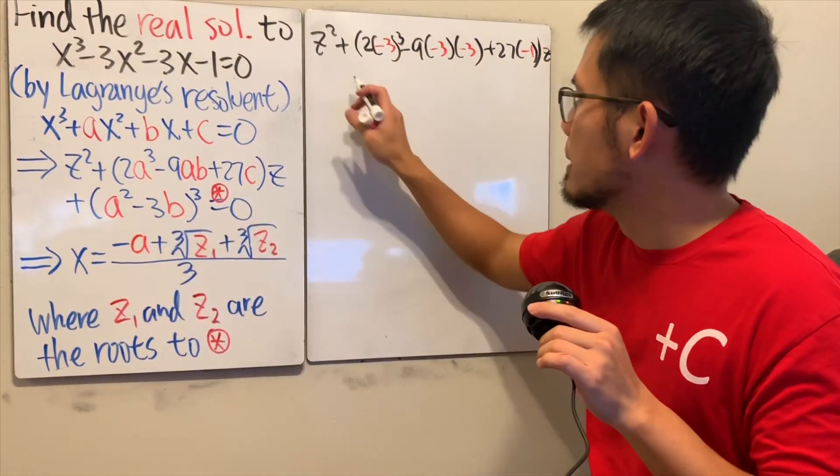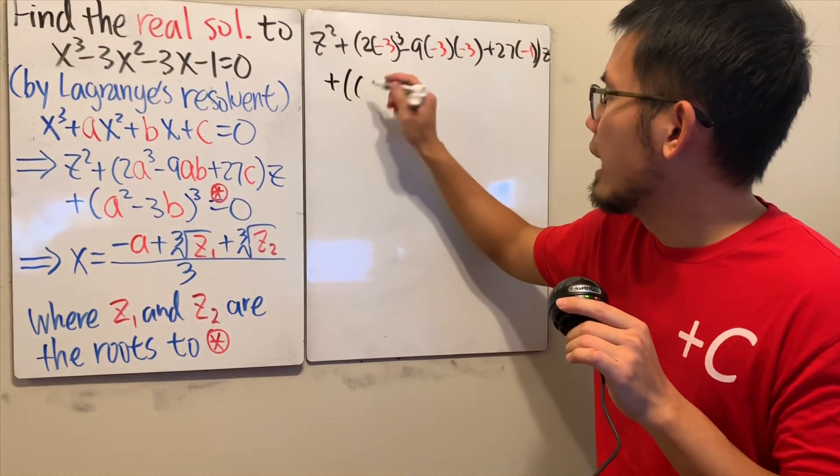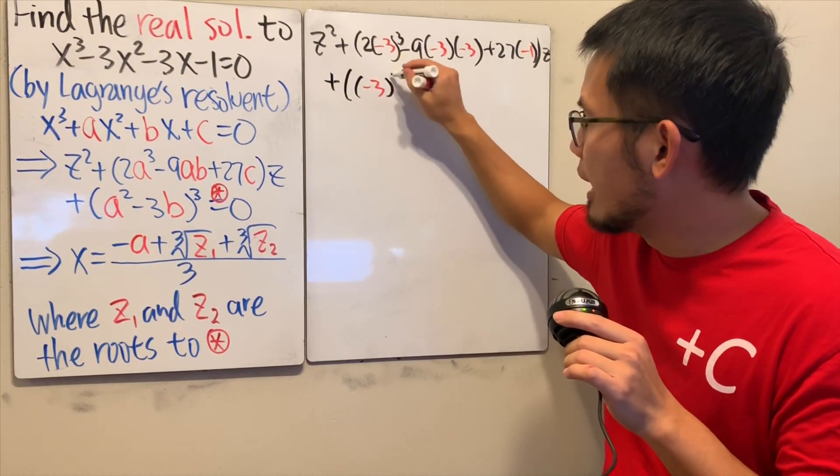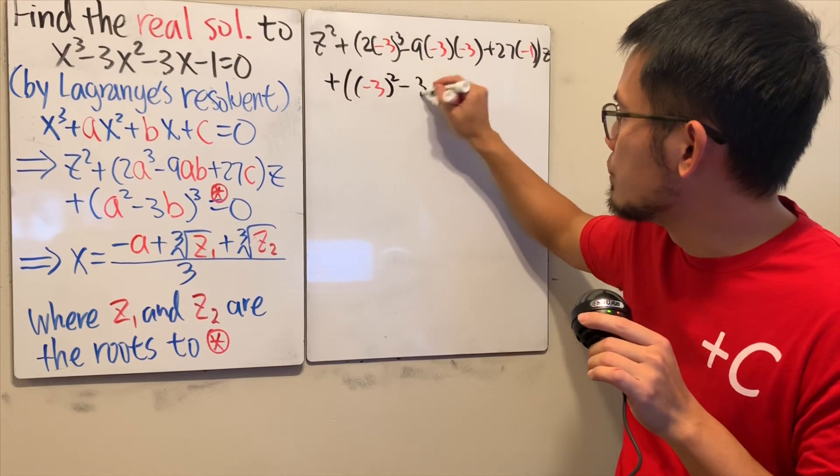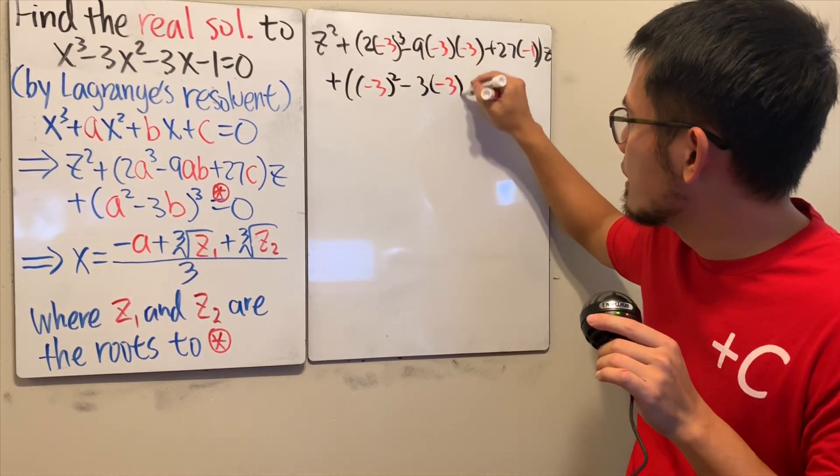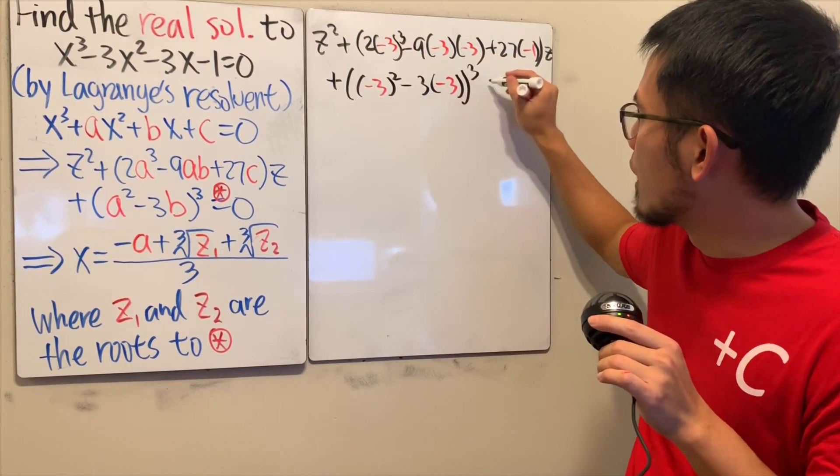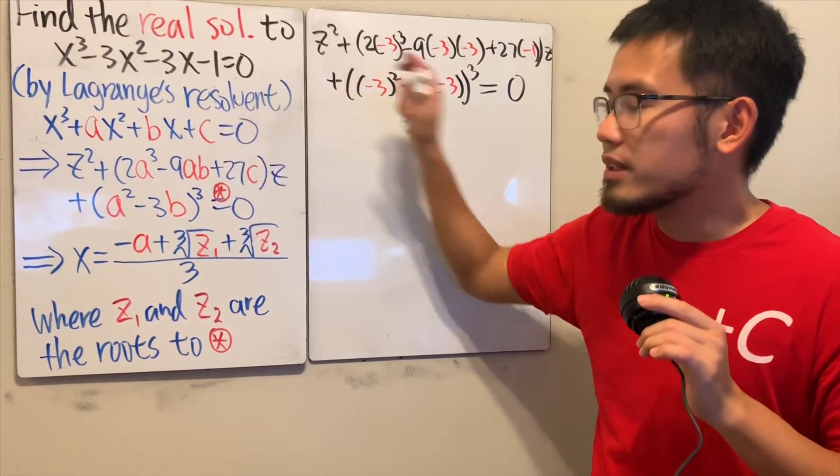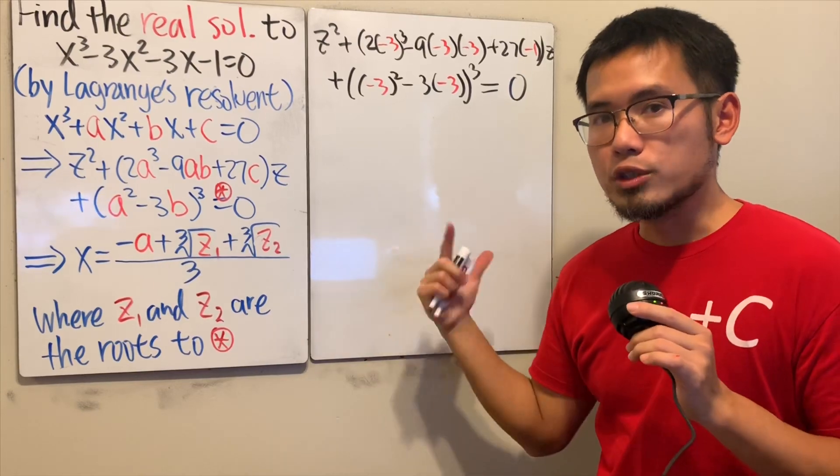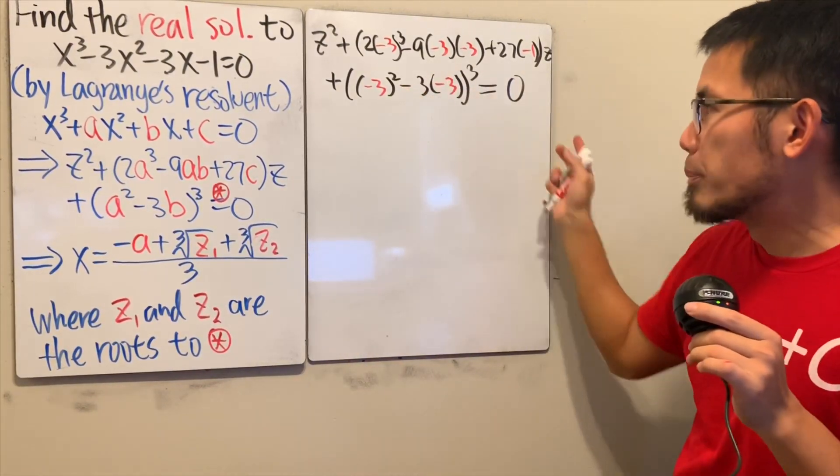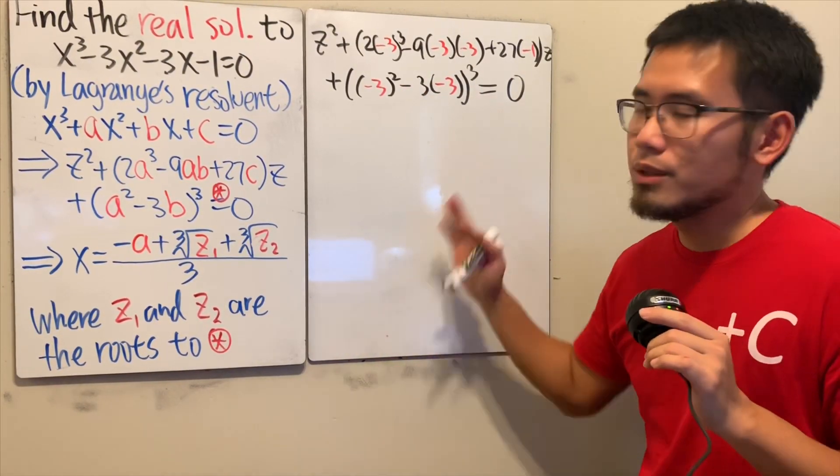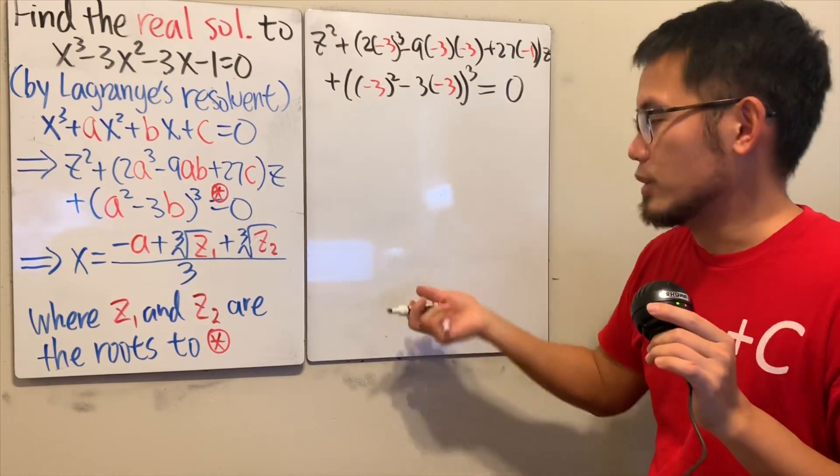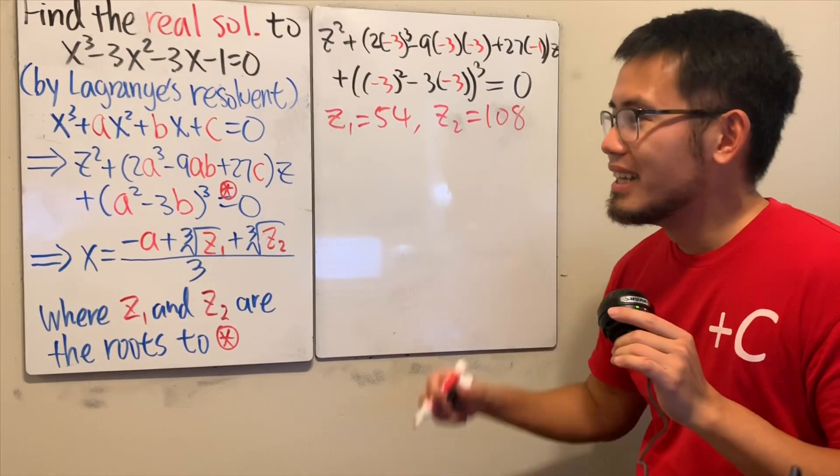And then we have this, plus (A² - 3B)³, and that's equal to 0. So this is what they call the resolvent equation. Notice this is just quadratic. The numbers are pretty big. Well, it's okay. It's quadratic, so we can solve it with the quadratic formula. So now, I will just put the things we need in here.